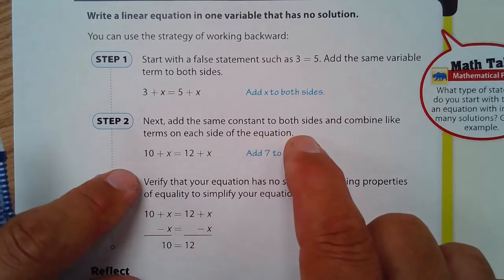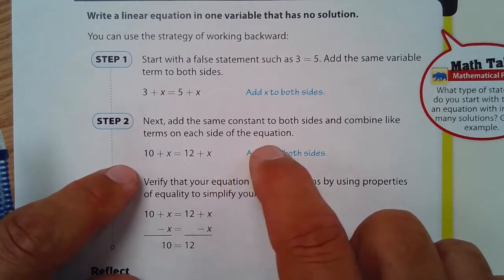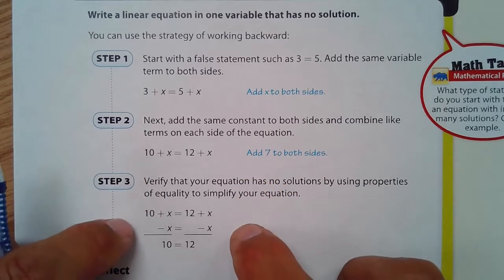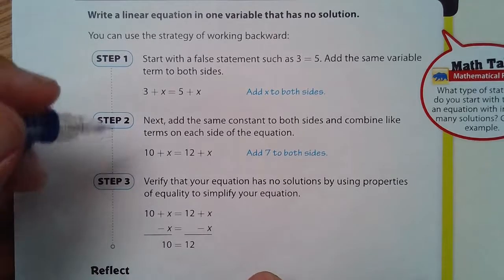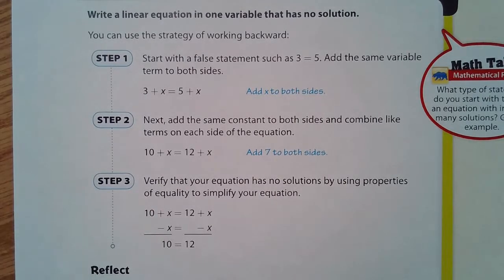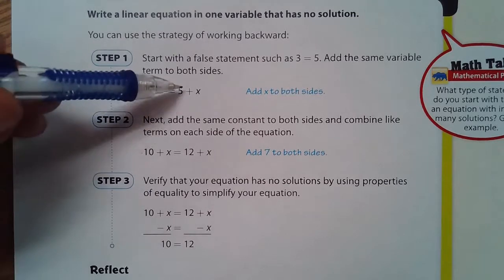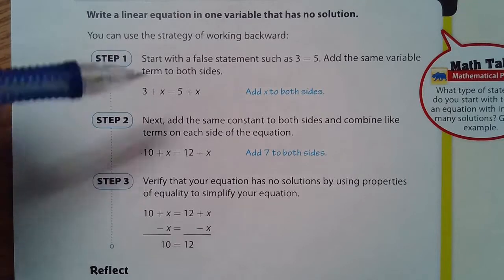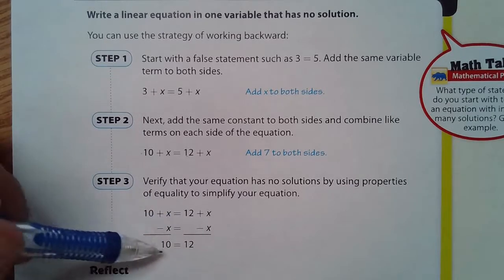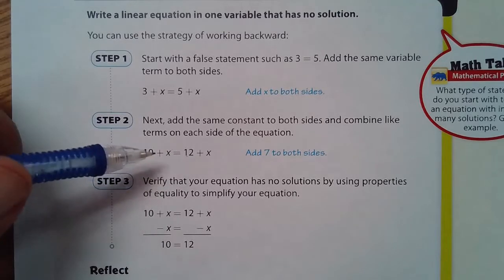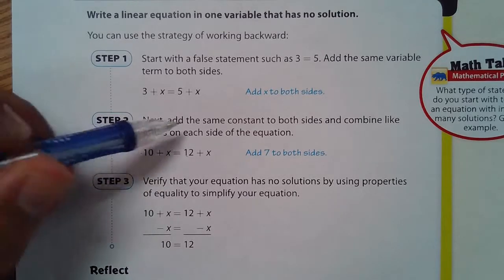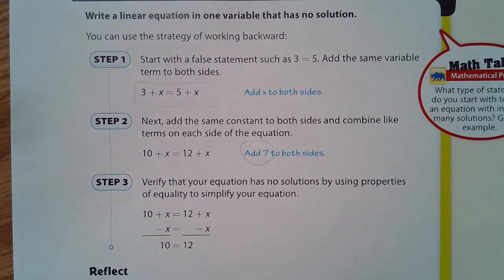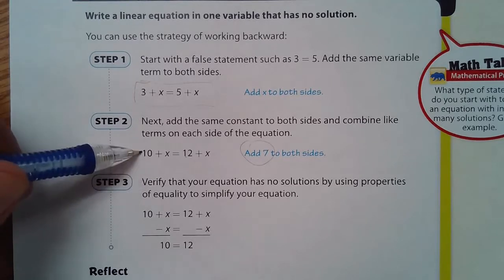Next, add the same constant to both sides. And combine like terms on each side of the equation. So, we add 7 to both sides. Which sounds great. And that makes sense because 3 plus 7 is 10. And 5 plus 7 is 12. Verify that your equation has no solutions by using the property of equality. So, you can subtract x and you get 10 equals 12. And really, I don't even see... We don't necessarily have to add 7. We could have stopped right here and said, Oh, there's no solution to that. But they wanted to step it up a little bit.